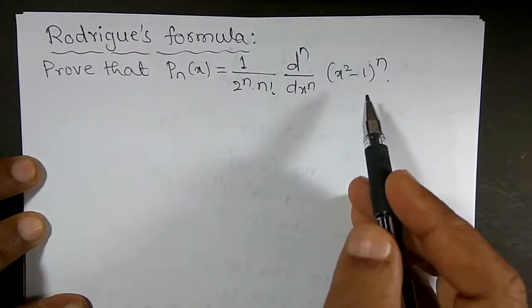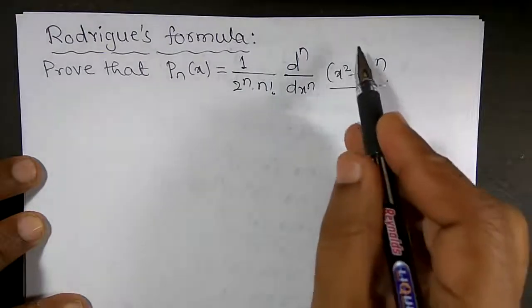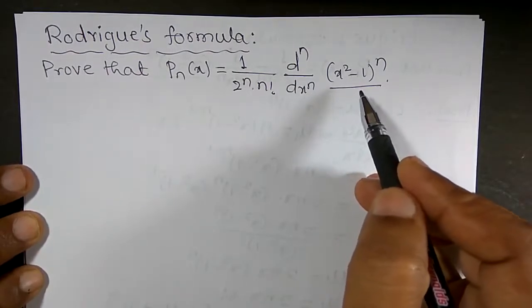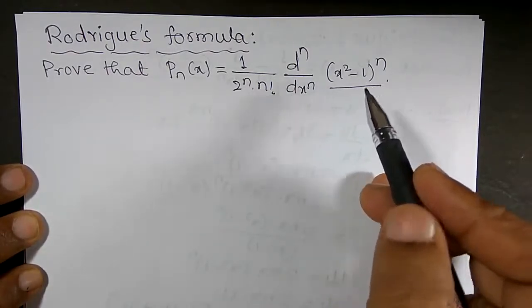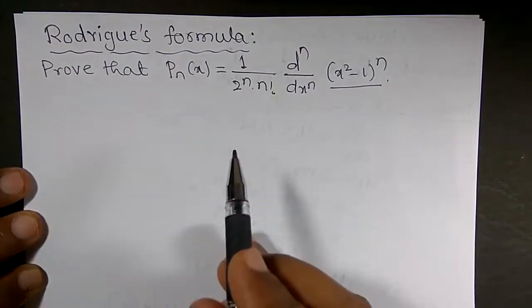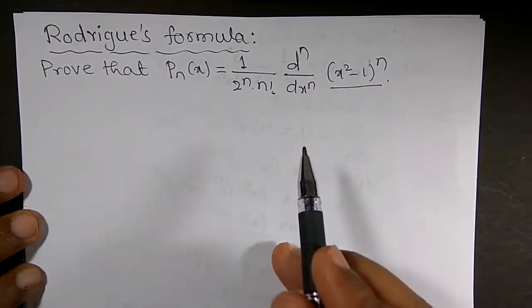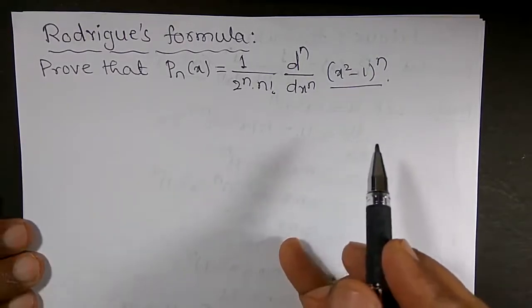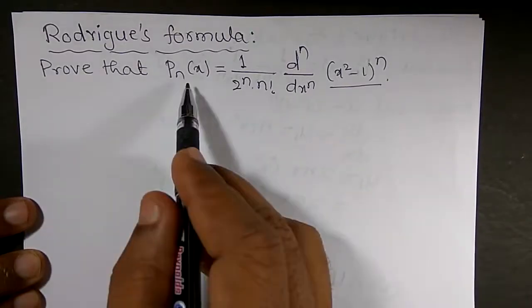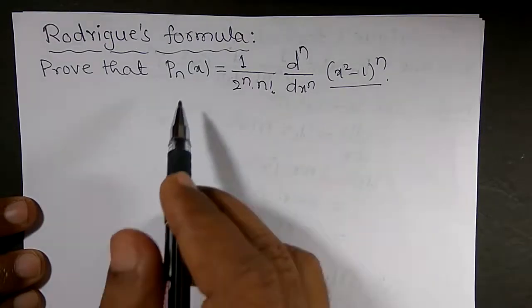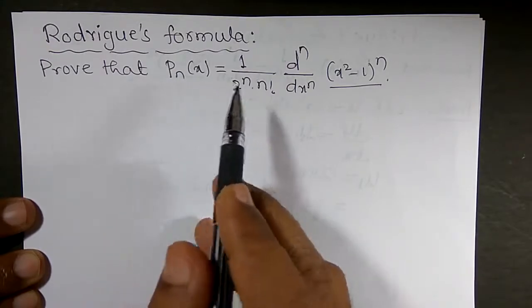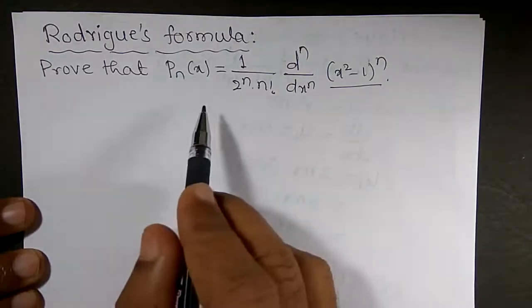How do we prove this? The proof is very simple. I can take this function as u, then find out the nth derivative, and I will get the value of this. I can say that it satisfies the Legendre differential equation. The Legendre differential equation is: (1 minus x squared) y'' minus 2x y' plus n(n+1)y equals 0. We also know that Pₙ(x) satisfies the Legendre differential equation and is a polynomial of degree n. So Pₙ(x) is equal to some constant factor k into uₙ.